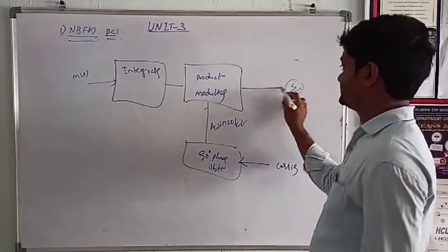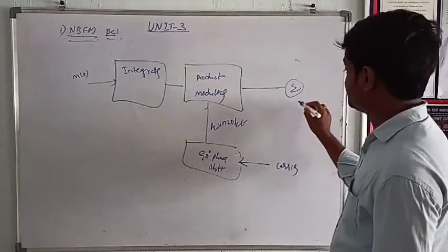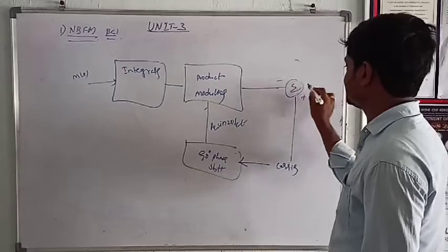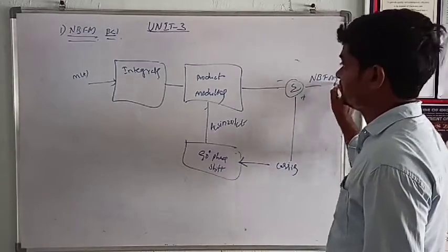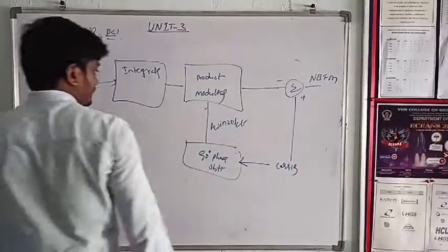Here we have a summer or adder. This is plus, this is minus, then the output is narrowband FM. This is the block diagram equation. M of t integrated, applied next to product modulator with AC sin 2 pi FC and carrier signal.